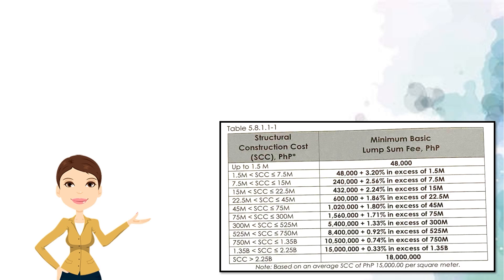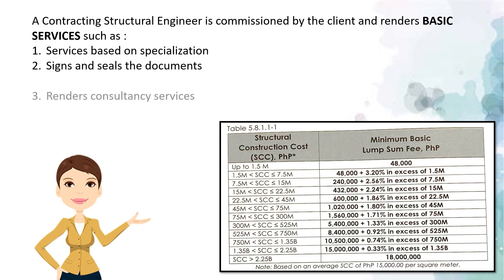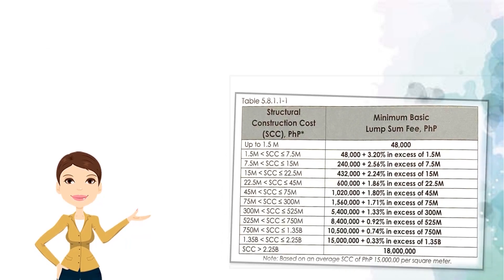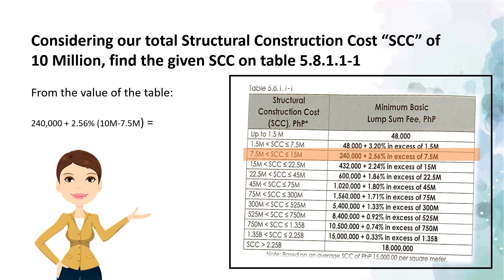To illustrate the first method, here is an example. Suppose a contracting structural engineer is commissioned by the client and renders basic services such as services based on specialization, signs and seals the documents, and renders consultancy services. We will calculate the minimum fee for a project with a structural construction cost of 10 million pesos. Considering our total structural construction cost of 10 million, find the given SCC on the table. From the value on the table, we can get 240,000 plus 2.56% in excess of 7.5 million. Calculate, and finally we get 304,000 pesos as the fee.